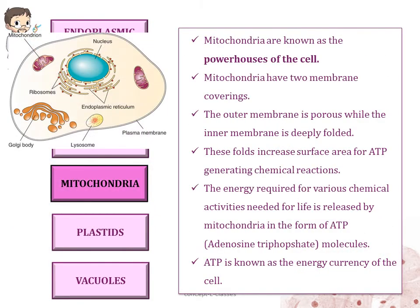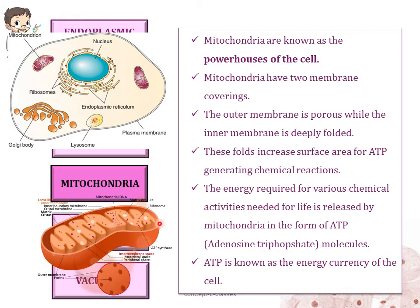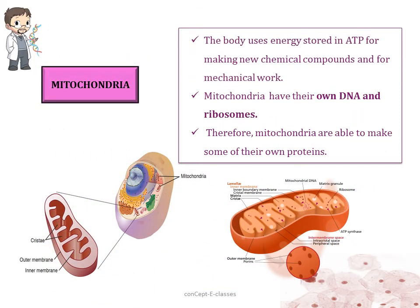Mitochondria are also known as the powerhouse of the cell. These small rod-shaped organelles have two membrane coverings — the outer membrane is porous while the inner membrane is deeply folded. These folds increase the surface area for ATP-generating chemical reactions. ATP, adenosine triphosphate, is known as the energy currency of the cell. The energy required for the various chemical activities in the cell is released by mitochondria in the form of ATP molecules, which is why mitochondria are called the powerhouse of the cell. The body uses energy stored in ATP for making new chemical compounds and for mechanical work. Mitochondria also have their own DNA and ribosomes, so they are able to make some of their own proteins.